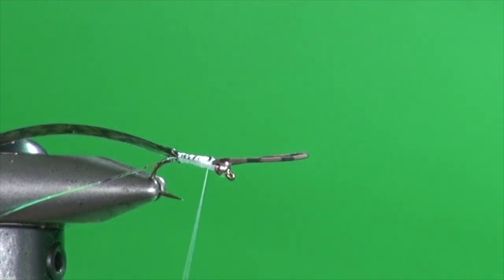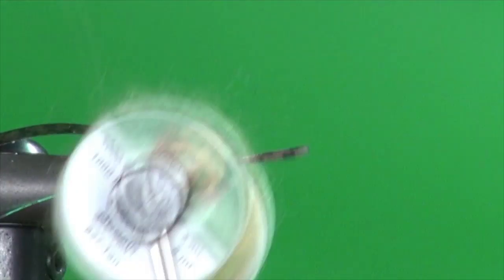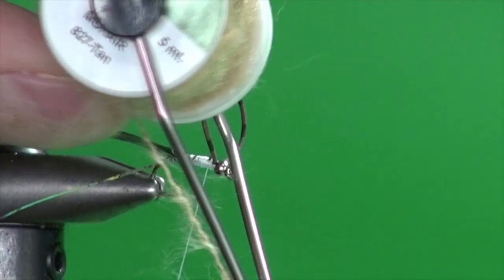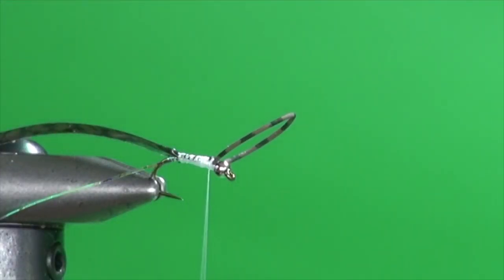Now for the body, we're going to use some of this Montana Fly mohair. This is 827 tan. It comes on a spool. Good body colors would be tan like masking tape, like this one. An olive coloration or even yellow. You can use any small, any thin material like this.